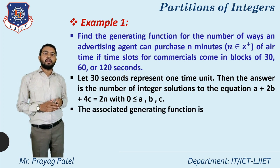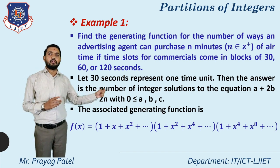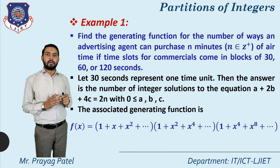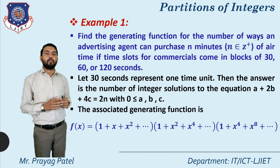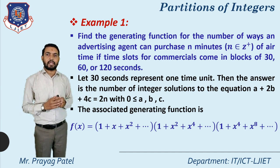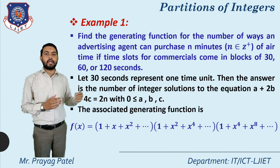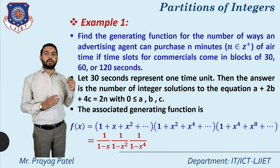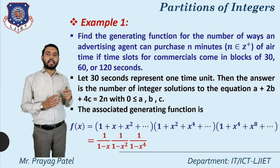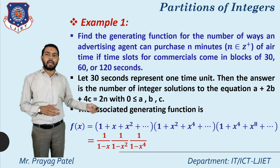The associated generating function is f(x) equal to (1 plus x plus x² plus ...)(1 plus x² plus x⁴ plus x⁶ ...)(1 plus x⁴ plus x⁸ ...), since the second part is double the first and the third part is 4c. In compact form, this is 1/(1-x) times 1/(1-x²) times 1/(1-x⁴).